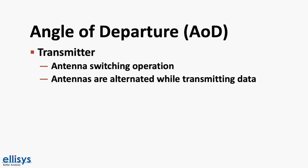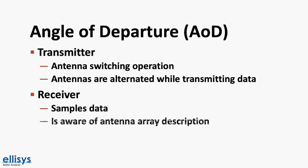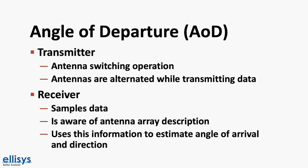At the receiver end, it samples the data being sent by the transmitter. Knowing the description and details of the antenna array is needed at the receiving end, and methods for transferring this information are defined via Bluetooth profiles, which had not yet been defined as of the recording of this video. It then uses all this information to calculate the angle of arrival and hence the direction of the transmitter.